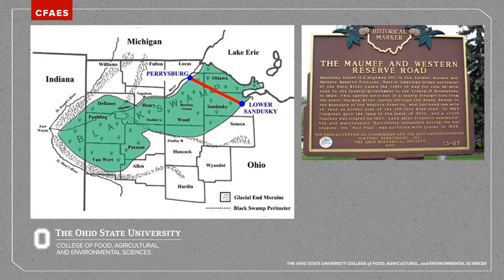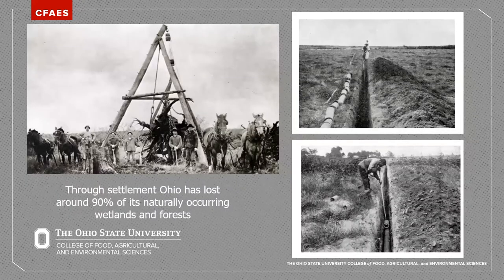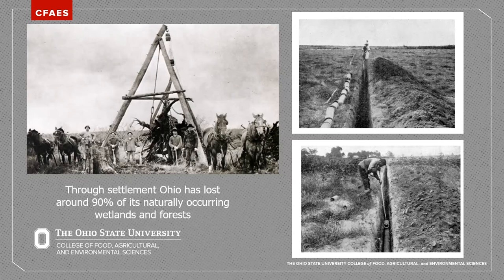After the swamp was drained and trees removed, people quickly realized how rich the soil was in that old swampland, which inevitably led to draining the rest of the swamp and cutting down the remaining trees so settlers could take advantage of this natural resource. Two railroad maps from northwest Ohio — one from 1860 and another from 1886 — illustrate just how fast this part of the state changed over a short period of time as that land was settled.